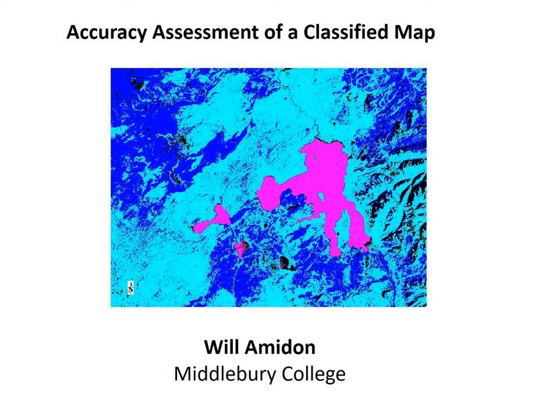In this video we're going to talk about how to do accuracy assessment on a classified map. You had a satellite image and went to a lot of trouble to classify it. Now you've got pixels that might represent a burned forest, an unburned forest, or water. You've got these map classes — you've created a map with information. And now you want to know how accurate is that map?